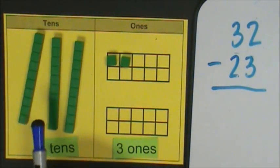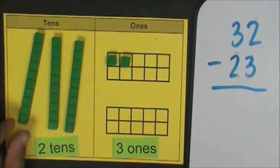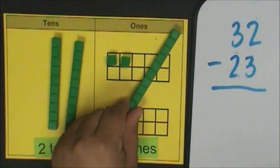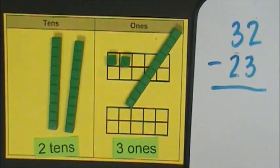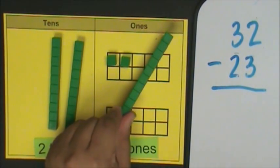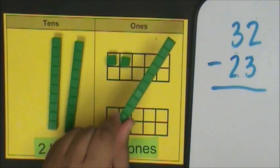I will go to the tens place and move one of my tens to the ones place. Because it's in the ones place, I'm going to exchange it into ten ones.